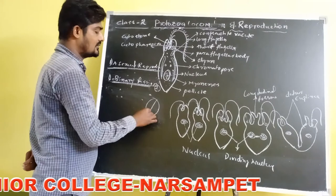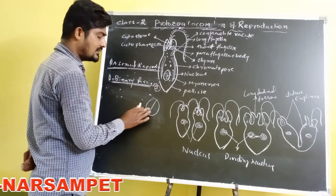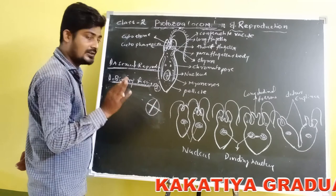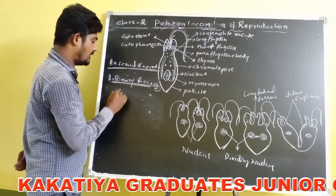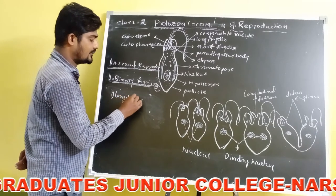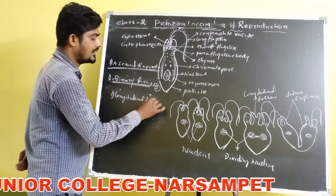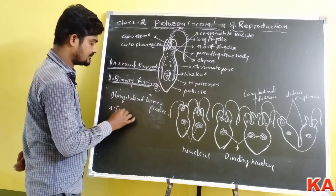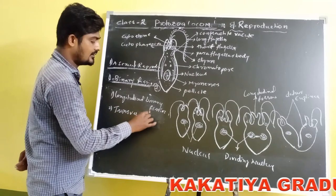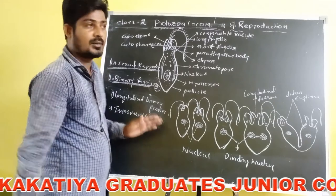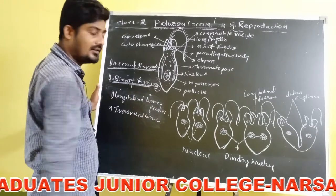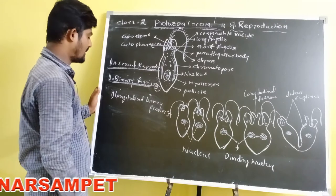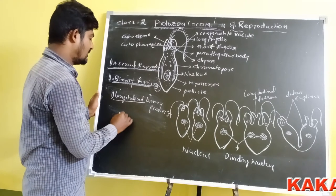Some organisms divide longitudinally, and some divide transversally. Depending on the plane of axis, binary fission is classified into two types: number one, longitudinal binary fission, and number two, transversal binary fission. This is a very important question for exams. Longitudinal binary fission is seen in flagellates.